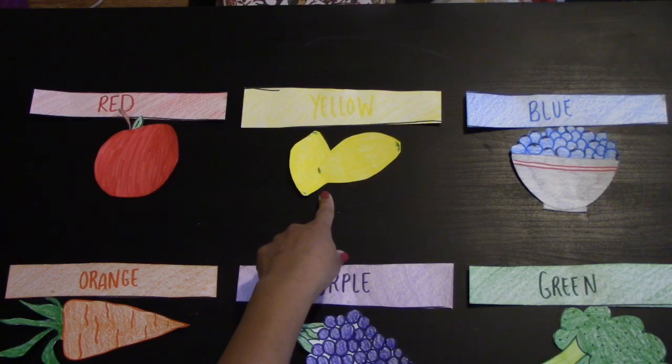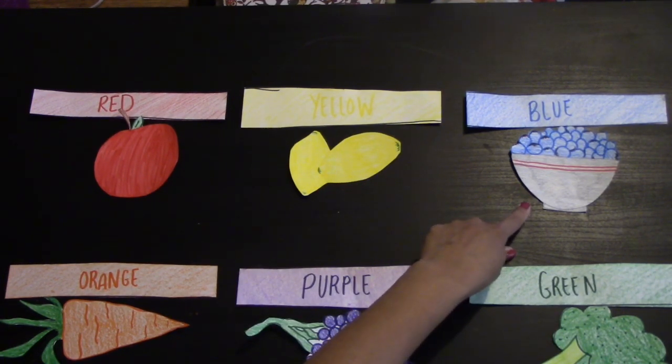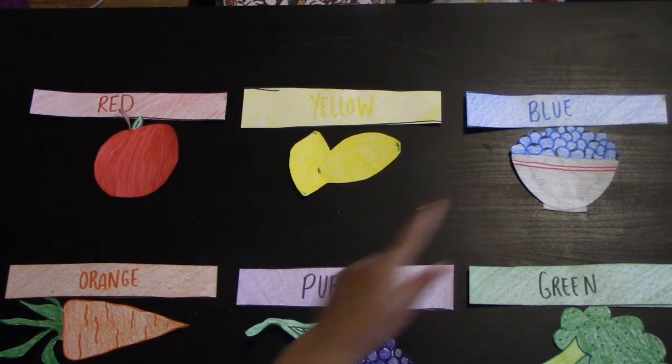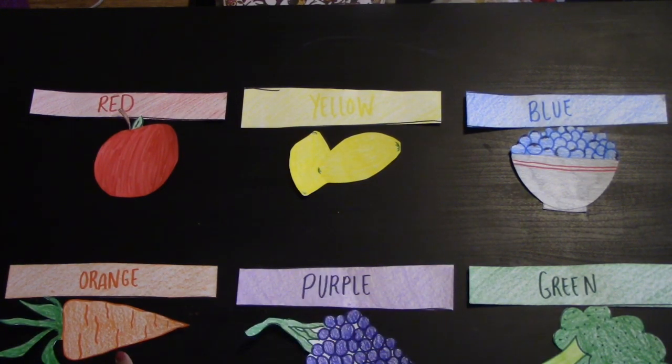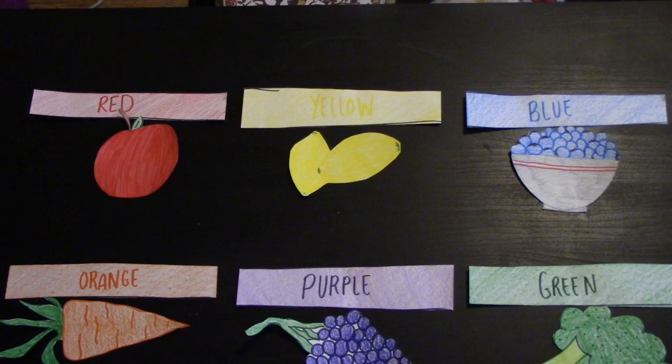The lemons are yellow. The blueberries are blue. The carrot is orange. The grapes are purple. And the broccoli is green.